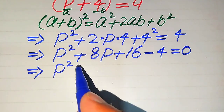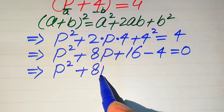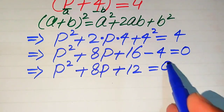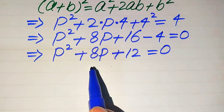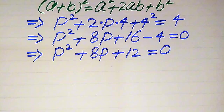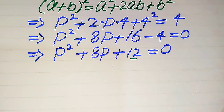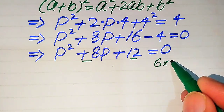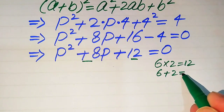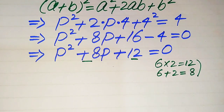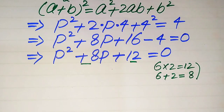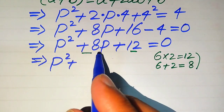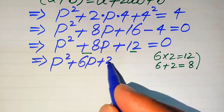After moving the 4 over, we simplify the like terms: 16 minus 4 gives us 12. So the equation becomes p² + 8p + 12 = 0. Now we need to break the middle term. We need two numbers whose product is 12 and whose sum is 8. That is 6 and 2, since 6 × 2 = 12 and 6 + 2 = 8.